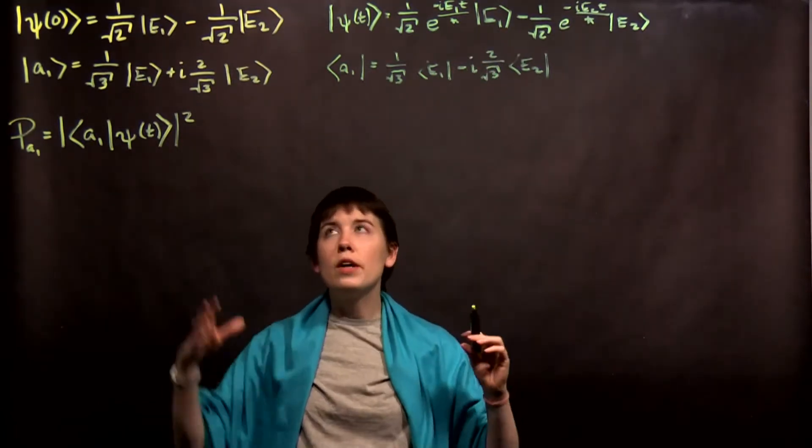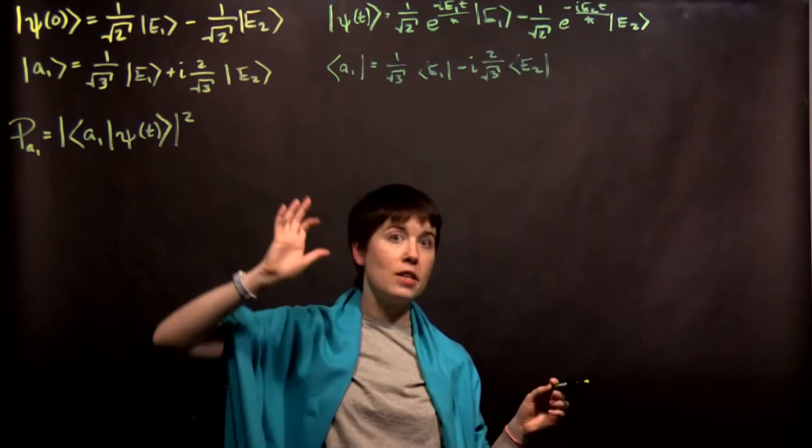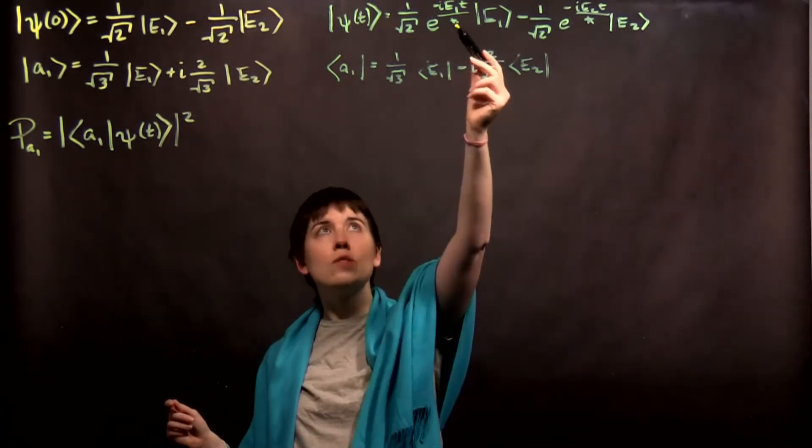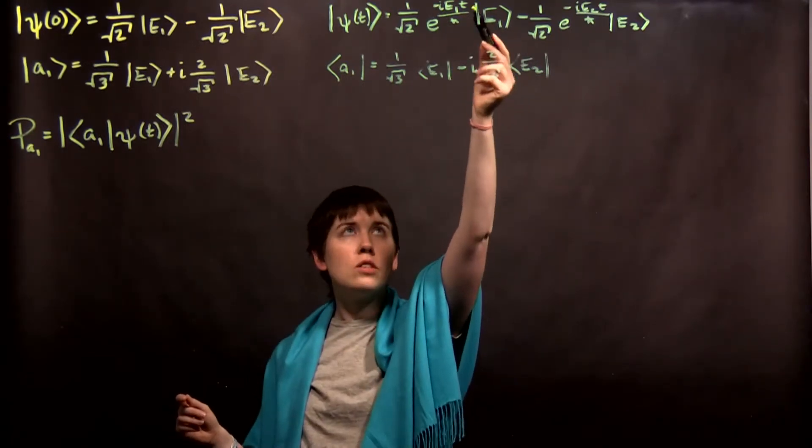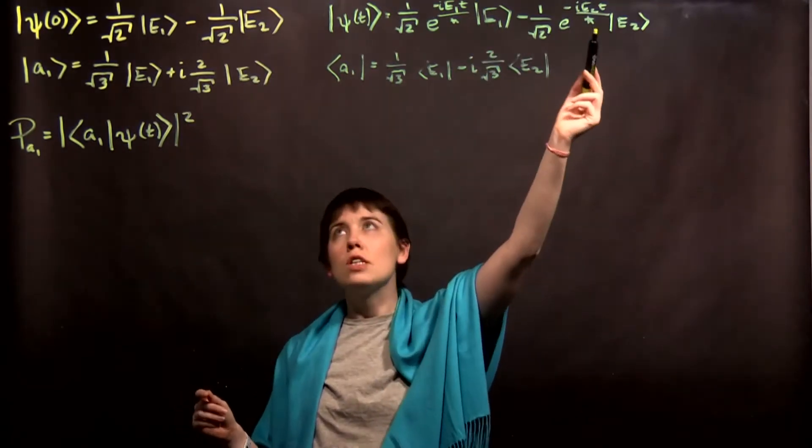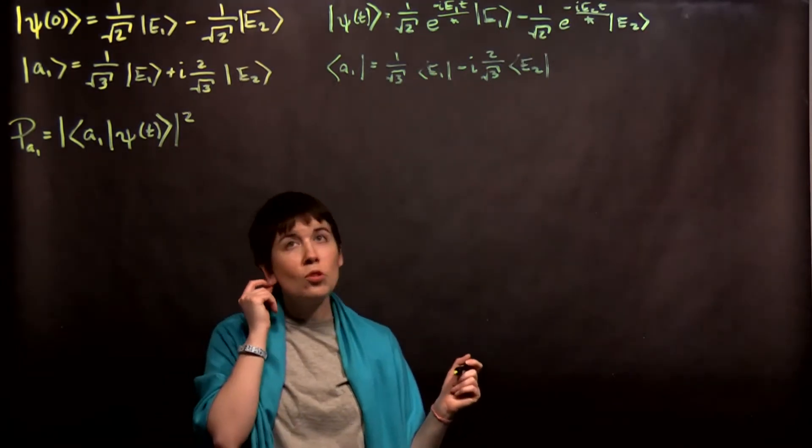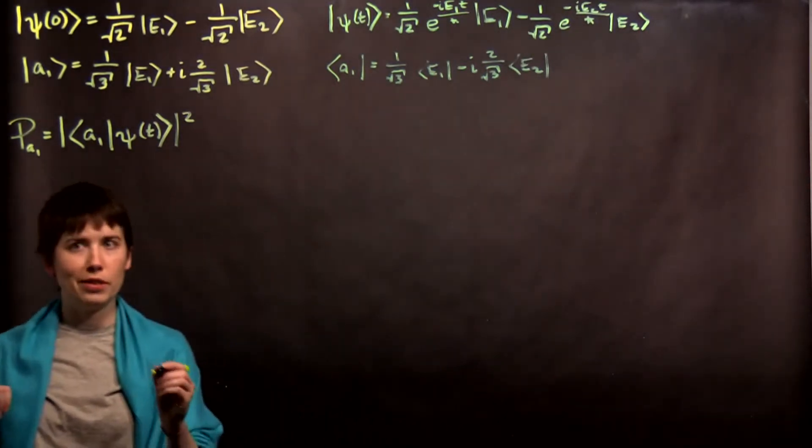So, whenever you want to take an initial state and introduce time dependence, it has to be in the energy basis. Cool, it already is. And then, we just stick that e to the negative i e1t over h-bar. And then, for e2. And so, we keep those coefficients the same. So, now, we are going to start our probability measurement.